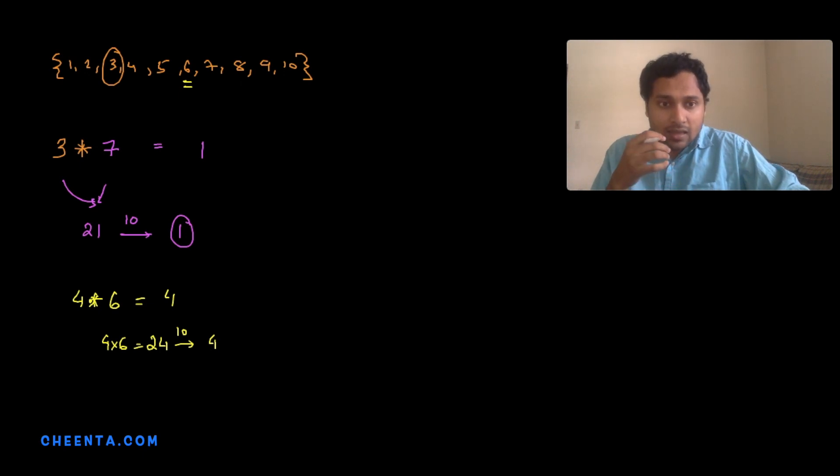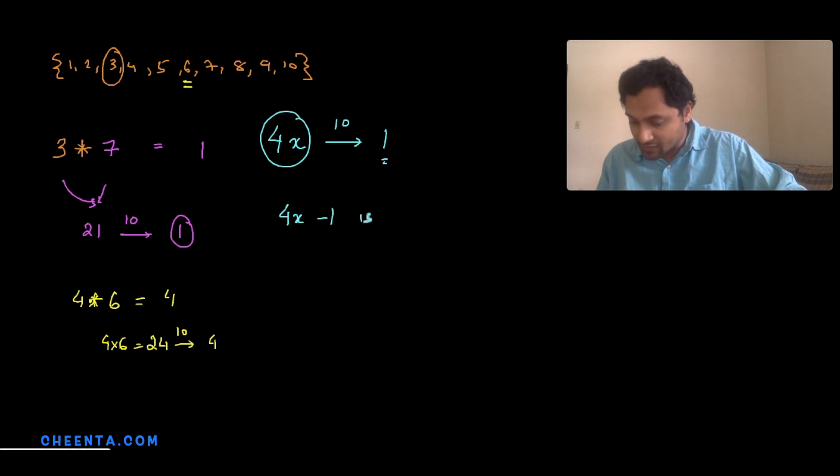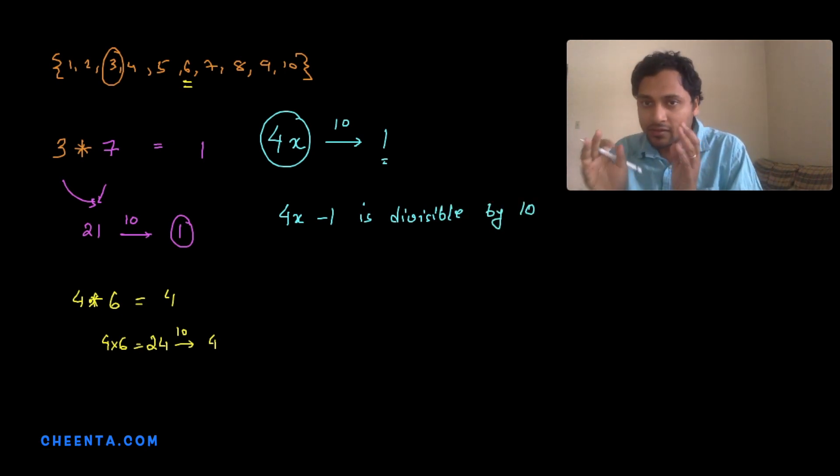We can actually prove this using some algebra. Let's suppose if 4 did have an inverse, let's suppose that inverse is x. Then that means 4 times x when divided by 10 will give remainder 1. But can this happen? If 4x gives remainder 1, then 4x minus 1 is divisible by 10. Of course, if you remove the remainder then whatever is left out is divisible by 10 - that's the meaning of remainder. Now 4x minus 1 equals 10 times some quotient, some q.